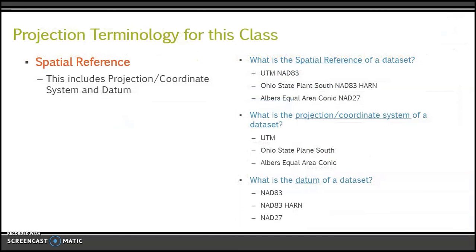For this class, I'm going to try to use the term 'spatial reference.' I'll sometimes say 'projection' out of habit, but I try to stick to spatial reference. When I say spatial reference, I'm including both the projection/coordinate system and the datum — all of that stuff together. So if I ask you what the spatial reference of a dataset is, you would tell me both the projection and the datum: for example, UTM NAD 83, Ohio State Plane South NAD 83 HARN, or Albers Equal Area Conic with the datum of NAD 27.